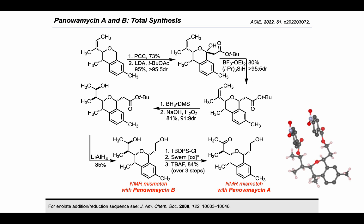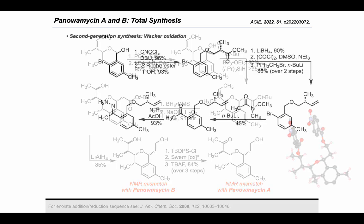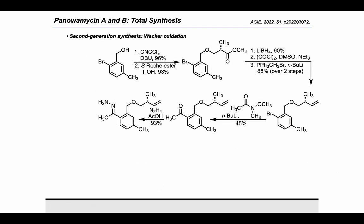This synthesis was also performed using the other isomer of alkene, and again both panolamycin A and B isomers were an NMR mismatch for the natural substance. Therefore, we determined that the hydroboration-oxidation was not a suitable strategy for the synthesis of the natural products and that the Wacker oxidation route would be pursued.